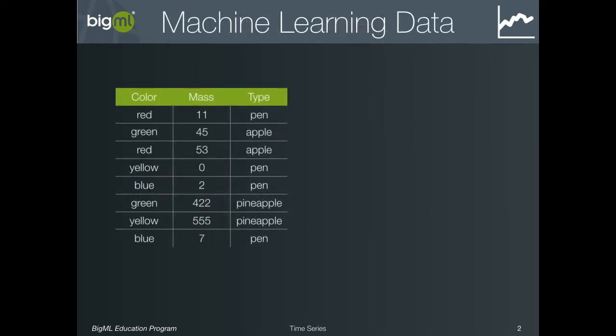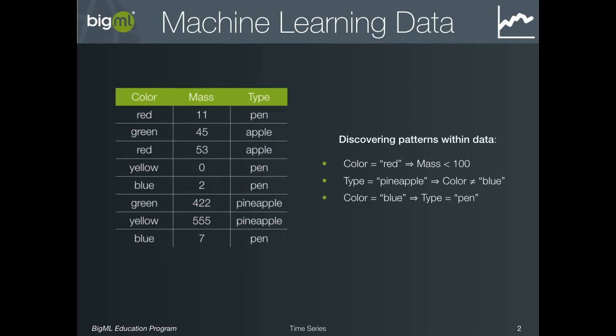Let's do a quick review of what supervised learning data looks like in the usual case. In traditional supervised learning, your dataset is a series of rows and columns, where each row represents a data point or instance, and each column or field represents some piece of information about that instance. In this toy dataset, we're trying to decide whether an object is a pen, an apple, or a pineapple, based on its color and its mass. Machine learning algorithms try to find patterns based on the color and the mass that will allow prediction of the type with high accuracy.